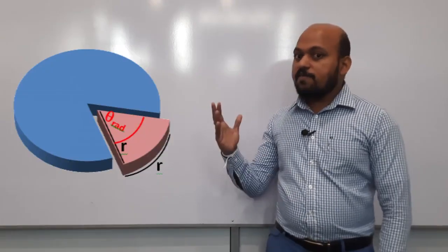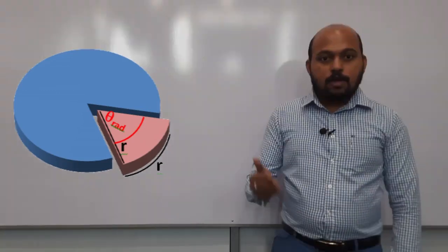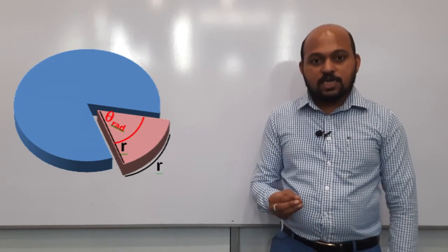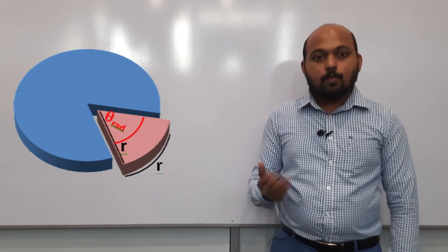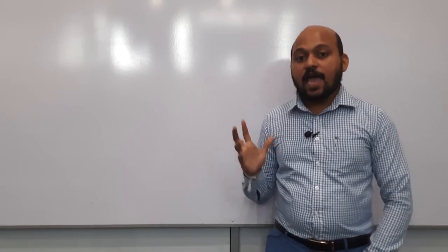Now let us consider the interpretation of those two supplementary units. Let us consider the interpretation of radian. In a circle with any radius, the plane angle subtended at the center of the circle by an arc of length equal to the radius of the circle is defined as 1 radian. Now let us consider the angle theta subtended at the center of the circle of radius R by an arc of length S.